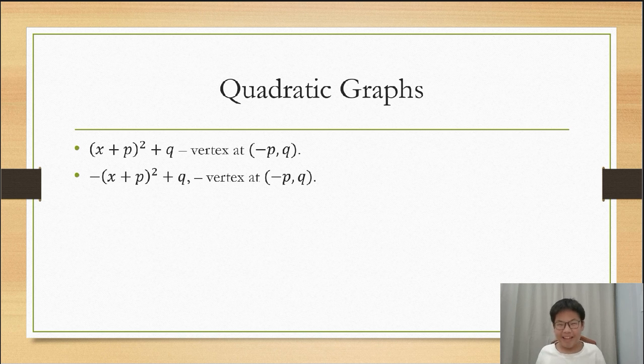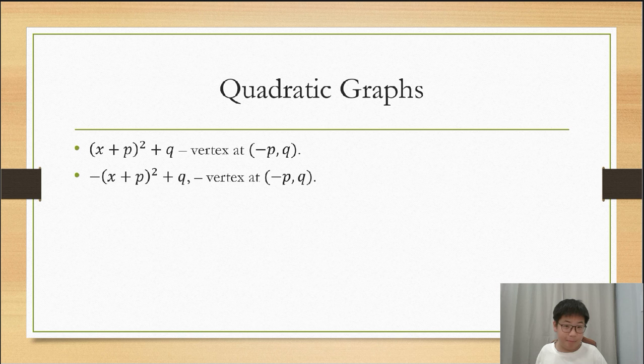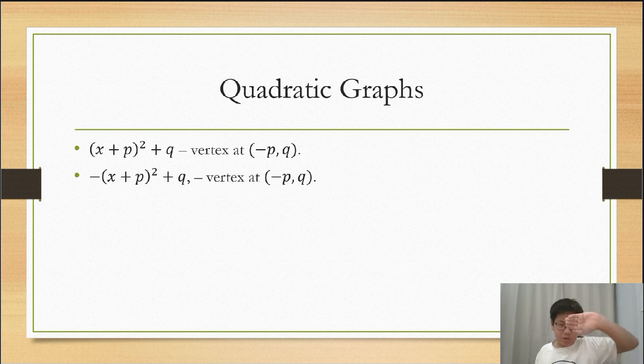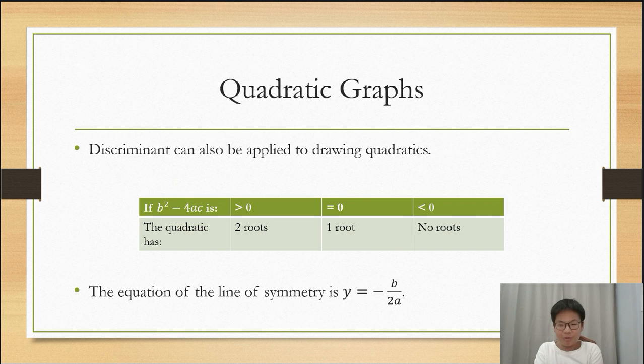If the quadratic can be written as (x plus p)² plus q, then the vertex, the minimum point on the quadratic, is at negative p, q. See how completing the square comes in handy? If the quadratic can be written as negative (x plus p)² plus q, the vertex is at negative p, q again. And it's pointing downwards, not like the upwards quadratic which we just saw.